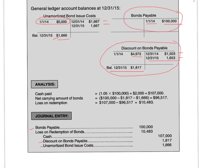The next step is to credit cash for the amount that was paid. In our case the bonds were redeemed at $105 — that means 105% of the principal of the bond — and we also have to pay $2,000 in expenses related to bond redemption, for a total of $107,000. That's your second step.